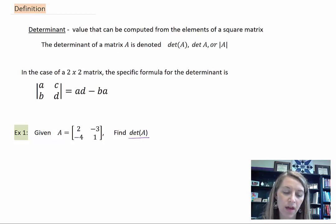It is a value that can be computed from the elements of a square matrix. So if we have a square matrix, we can compute a single value or a single number from this square matrix.